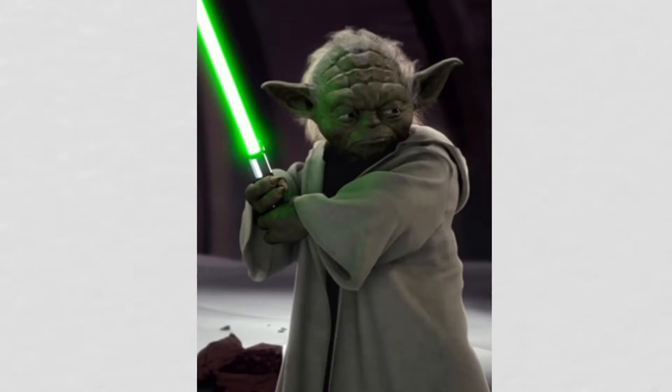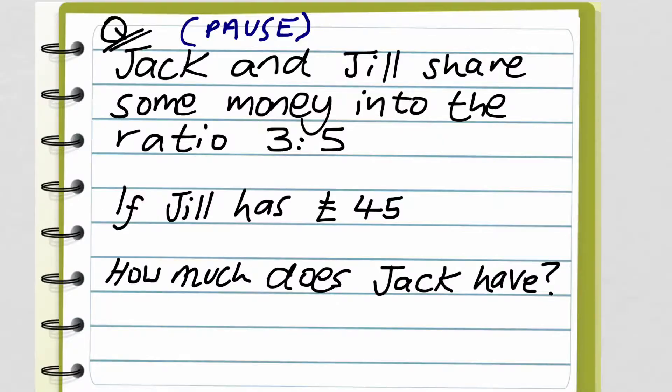Right, so now you want to master dividing quantities into ratio. Well, have a go at this question. Jack and Jill share some money into the ratio 3 to 5. If Jill has £45, how much does Jack have?